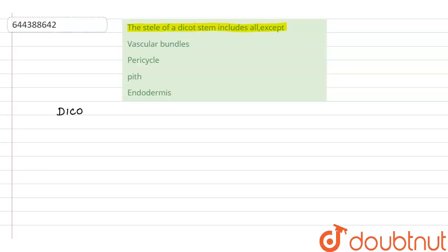First let's see the section of dicot stem, what are the parts you can see. So if we take this as the dicot stem, the outermost layer is the epidermis, which has root hairs.